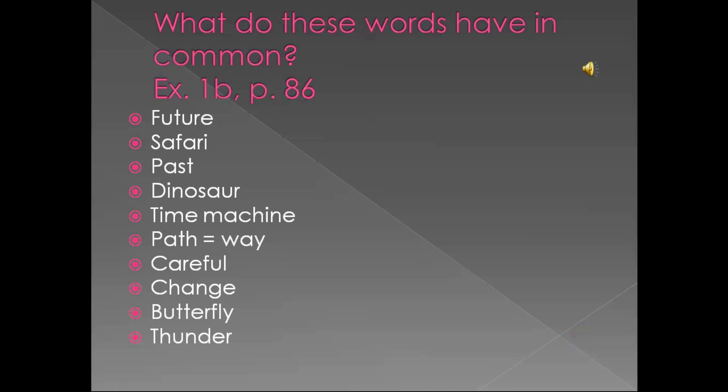So what? Well, what about the foxes that will need those mice to survive? For want of ten mice, a fox dies. For want of ten foxes, a lion starves. Fifty-nine million years later, a caveman goes hunting saber-toothed tiger for food. But you, friend, have stepped on all the tigers in that region by stepping on a single mouse. So the caveman starves. And the caveman is an entire future nation. Destroy this one man, and you destroy a race, a people, an entire history of life. Step on a mouse, and you crush the pyramids. So be careful. Stay on the path.